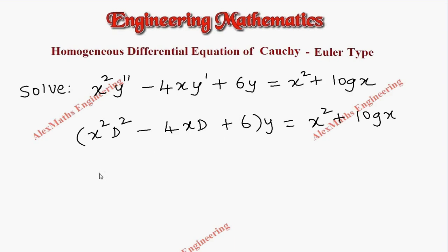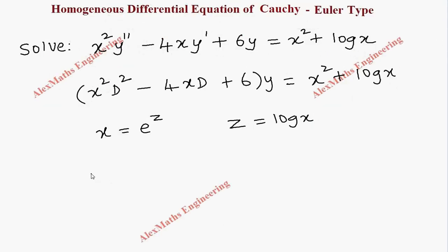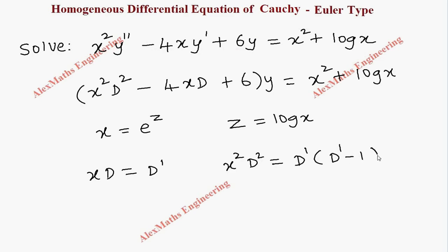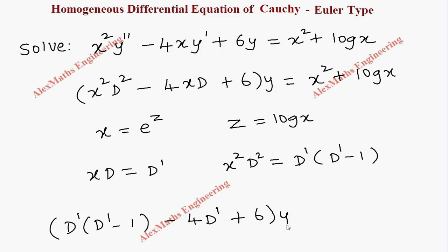Using substitution, we are going to reduce this into a constant coefficient equation. The substitution is x equals e^z, or z equals log x. We have the results: x·D = D' and x²·D² = D'(D' − 1). Substituting: the first term becomes D'(D' − 1), minus 4·D', plus 6, whole bracket, into y equals...